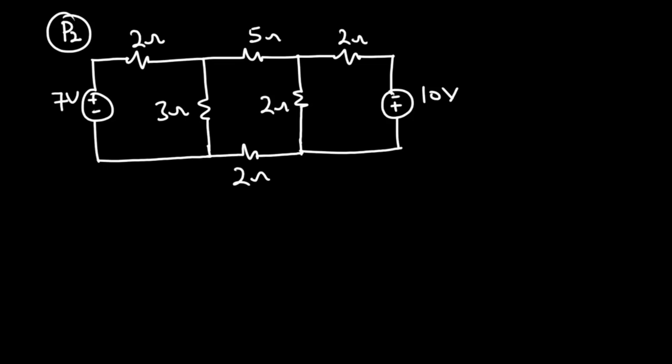Now let's solve problem two. We have two voltage sources: 7 volts and 10 volts, and six resistors connected in the circuit. We are going to find the current flowing through all parts of the circuit. The first thing to do is assign currents.